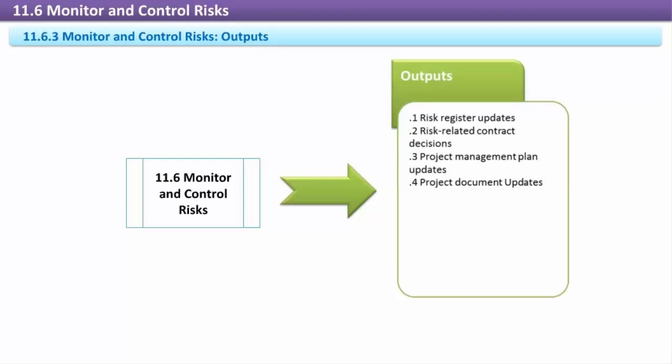Organizational Process Assets Updates: The reasons for corrective or preventative actions and any other lessons learned from risk monitoring and control should be documented as part of the lessons learned process so that they are available for later projects. Change Requests: Risk monitoring and control may identify changes that need to be made to any component of the project management plan to influence risks. These requests are submitted for review to the integrated change control process.